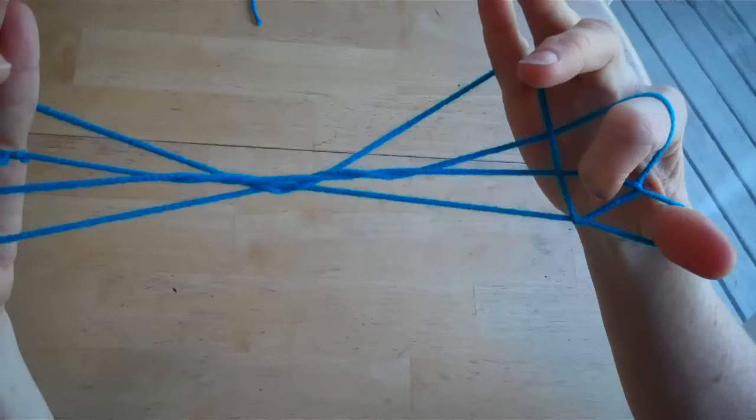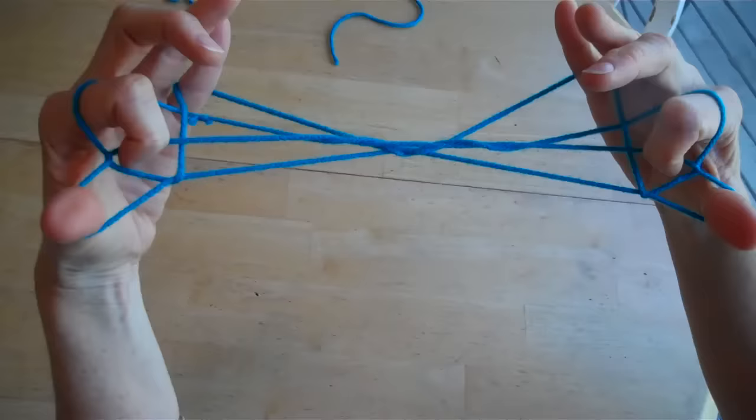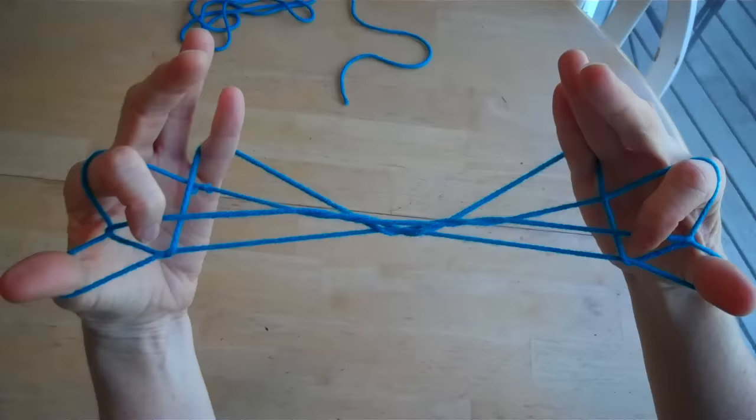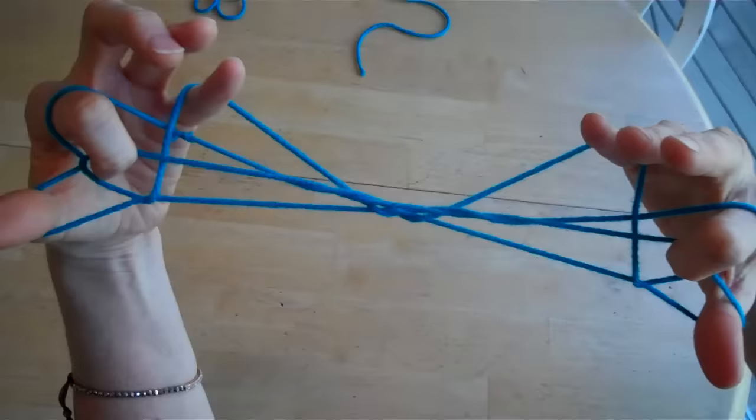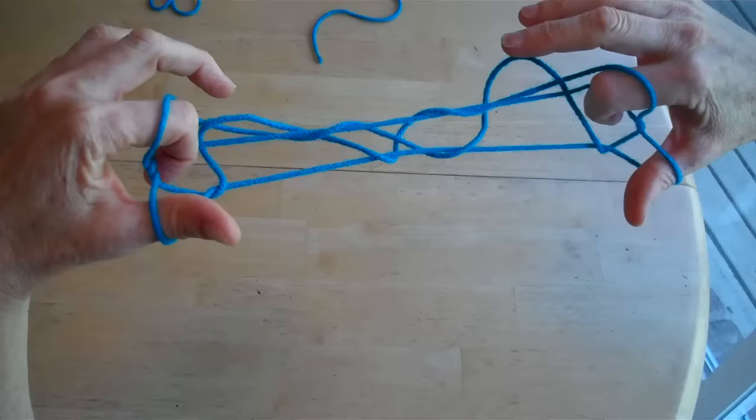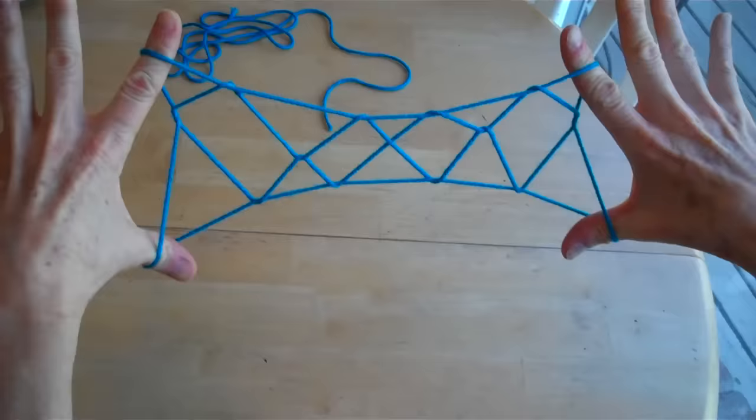Very carefully, I'm going to drop my pinkies while letting this string that's on the back of my pointers slide off. This will be the new string on my pointers. I'm going to do this very slowly. So drop the pinkies and at the same time, turn your hands away letting that outer string slip off. And there you have Jacob's Ladder.